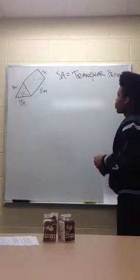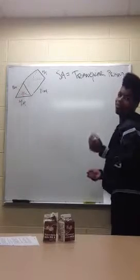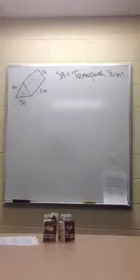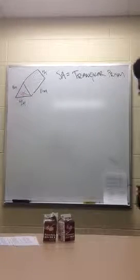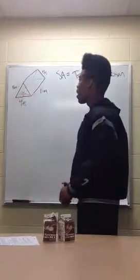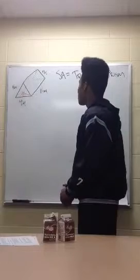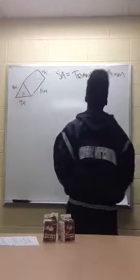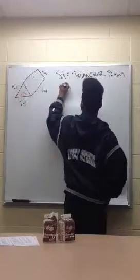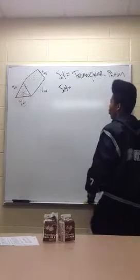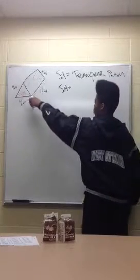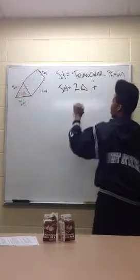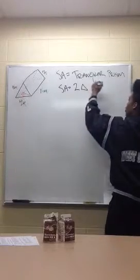Next, we have to break this shape down into its separate parts. So, we have two triangles as the bases. Just write two triangles. And then, you have to add that to the three rectangles.